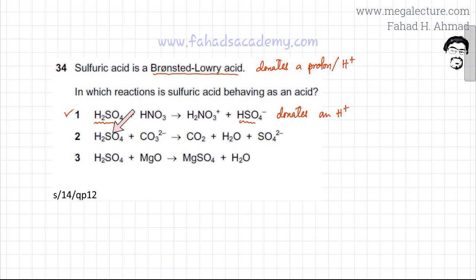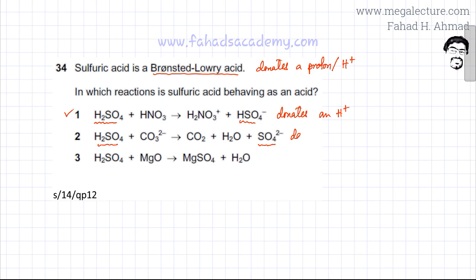In option 2, you have H₂SO₄ on one side and SO₄²⁻ on the other. Starting with H₂SO₄ and ending with SO₄²⁻ means that in this reaction it ended up donating 2 H⁺ ions. So it is still acting as an acid — it is a proton donor.